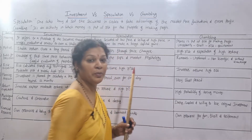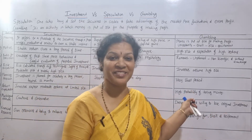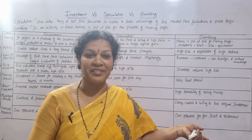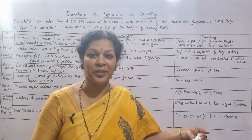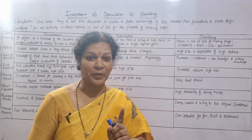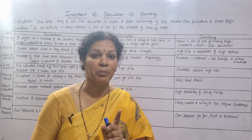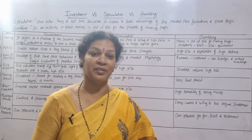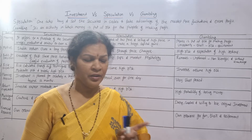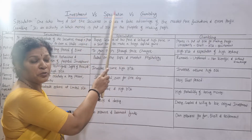To do speculation, you need to have good knowledge, because sometimes prices can fall. If you purchased at 100 rupees and the price decreases to 90 rupees, you are at a loss. So a speculator should have good knowledge about securities before going for speculation.